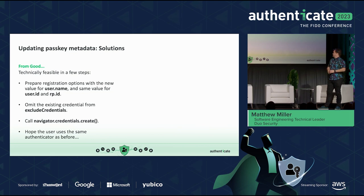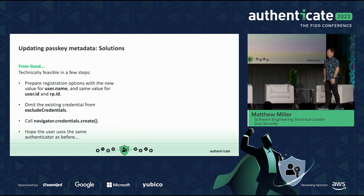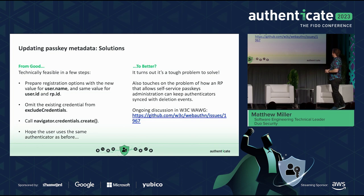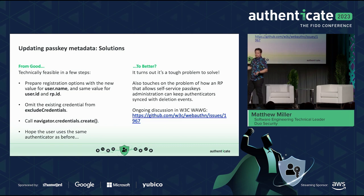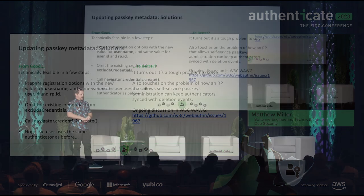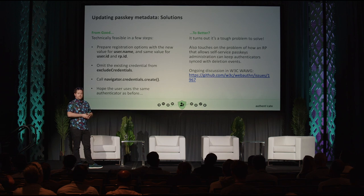Mission accomplished — unless the user forgets which authenticator they used, and now they have two credentials: one with the correct username and one with the bad username. Things can get messy for the RP. It turns out it's a tough problem to solve overall. Within the WebAuthn working group, this is something RPs want — keeping the relying party's knowledge of valid credentials in sync with the authenticator and the provider, because right now there is not a good means of communication between the two, and state can fall out of sync very easily.